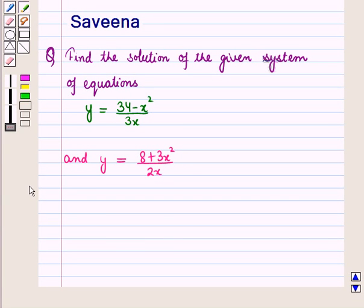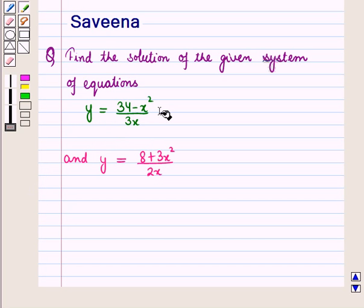Hello and welcome to the session. In this session we will discuss a question which says: find the solution of the given system of equations, where the equations are given as y = (34 − x²) / (3x) and y = (8 + 3x²) / (2x).